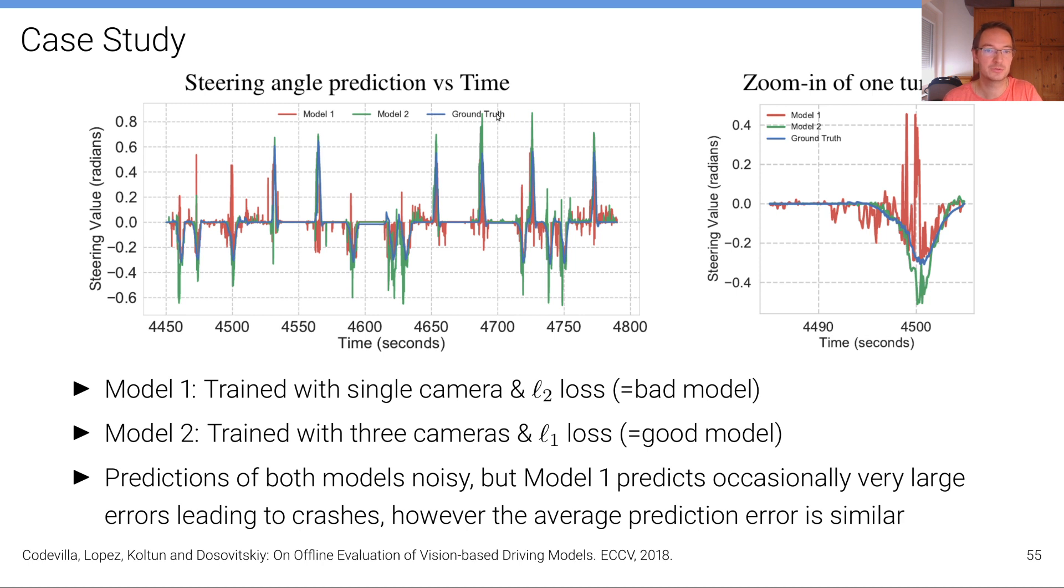And the first model was trained using just a single camera, no data augmentation and L2 loss. The second model was trained with three cameras, so it was using data augmentation and the L1 loss, which is more robust. So it's a better model.